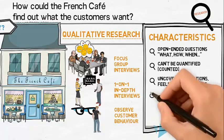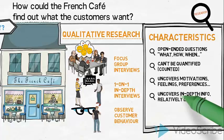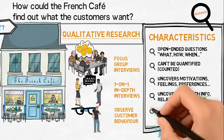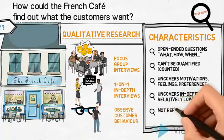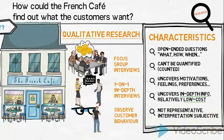The benefits of qualitative data are that it can uncover detailed, in-depth information from each respondent and that it is often relatively low cost to carry out. However, the disadvantages are that only a few respondents are used and they are unlikely to be representative of the entire target group. Results can be difficult to interpret, making the results subjective.